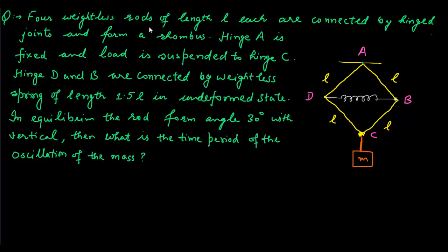Four weightless rods of length L each are connected by hinged joints and form a rhombus. Hinge A is fixed and a rod is suspended to hinge C. Hinges D and B are connected by a weightless spring of length 1.5L in its undeformed state. In equilibrium, the rods form an angle of 30 degrees with the vertical.